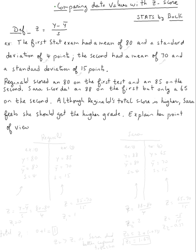Reginald scored, so we have Reginald and Sarah. Reginald has scored 80 on the first exam, so let's do exam one, exam two, and then Sarah, same thing, exam one, exam two.